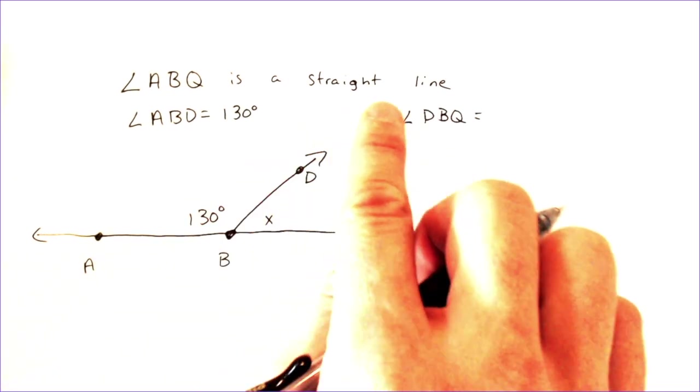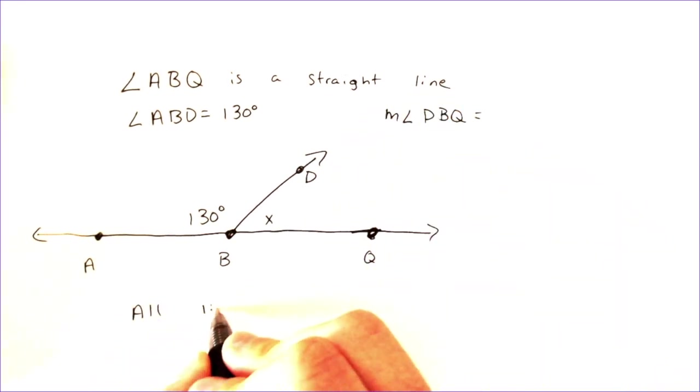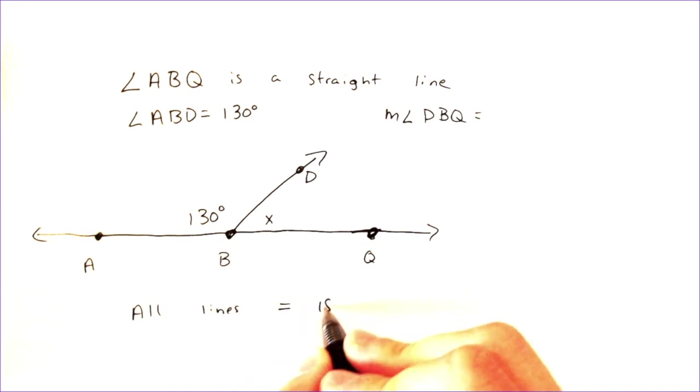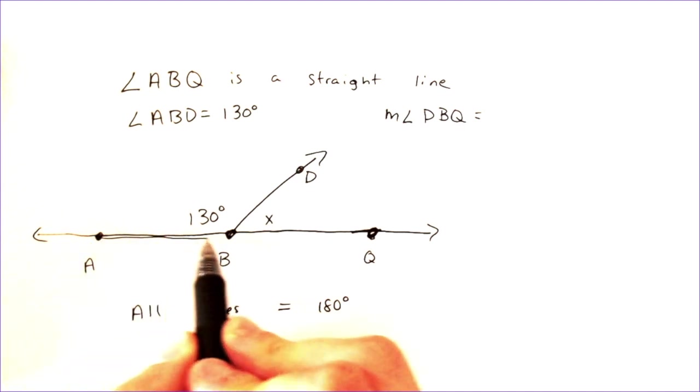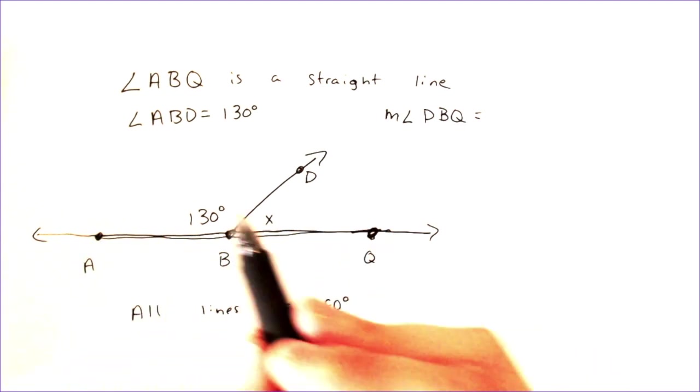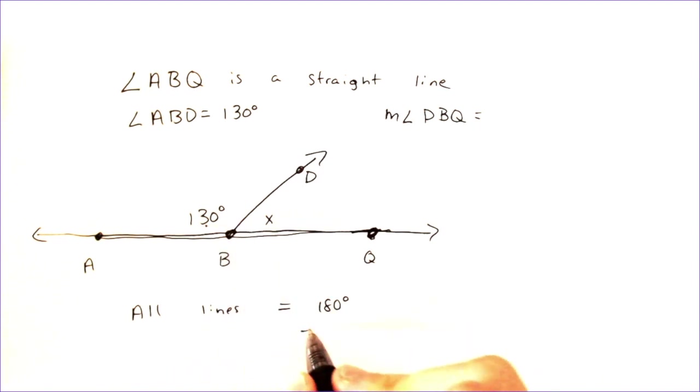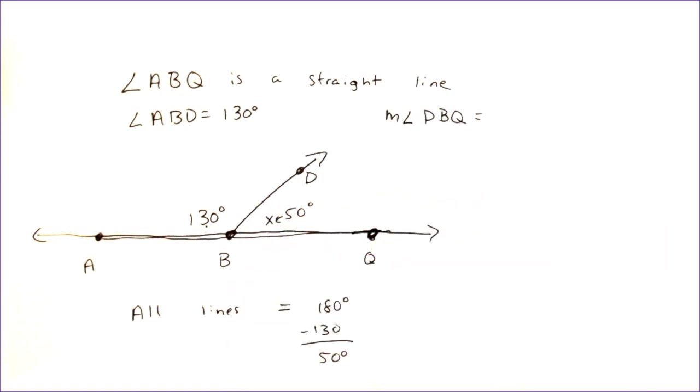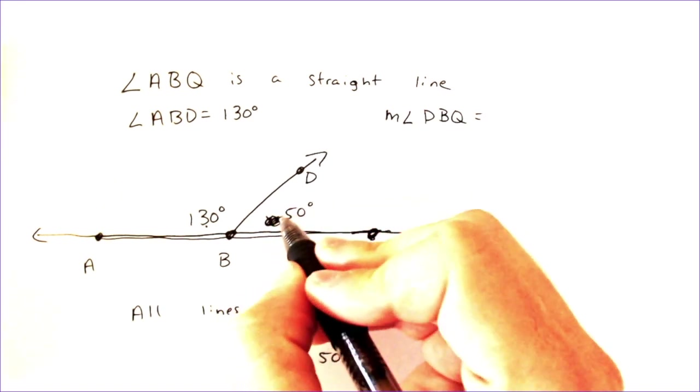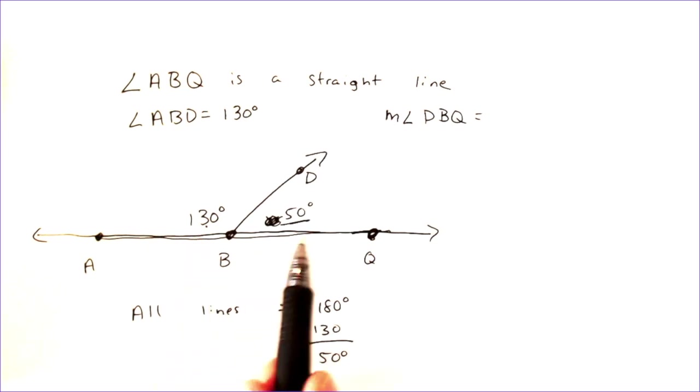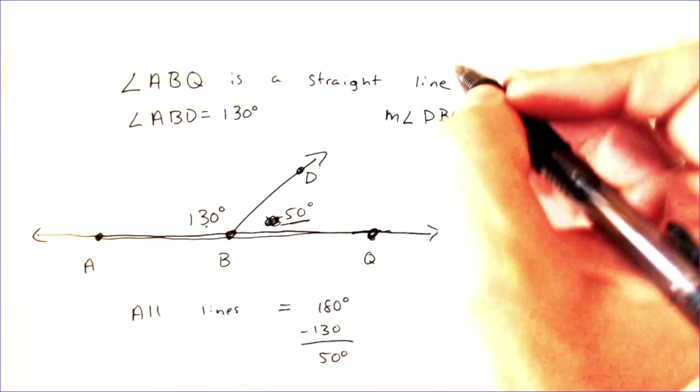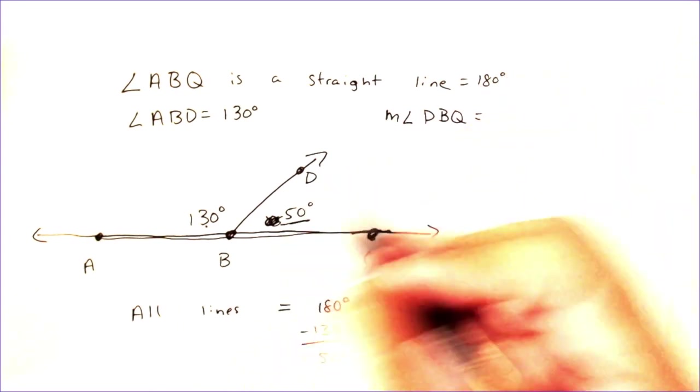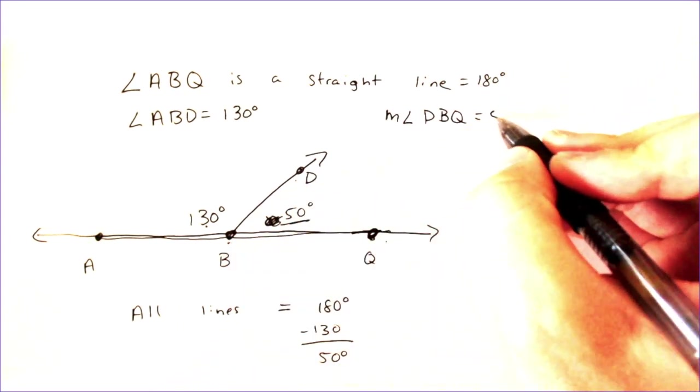fun fact, all lines equal 180 degrees on one side if you take the top half or the bottom half. So all lines are equal to 180 degrees if it's a straight line. So if this whole thing is equal to 180 degrees, well, then if there's 130 here, we can just take 130 away from 180. We'd have 50 left over for that angle right there. So that means that this angle right here is just 50. 130 and 50 make 180. So the thing to take away there is straight lines equal 180 degrees, and we found our DBQ is equal to 50 degrees.